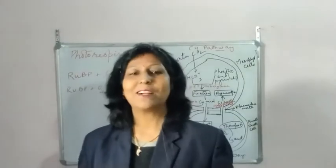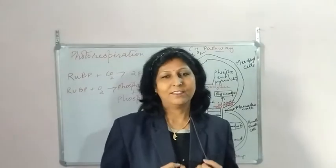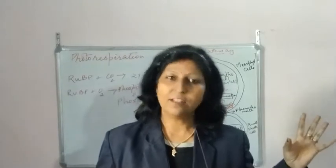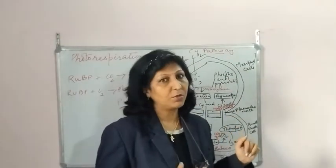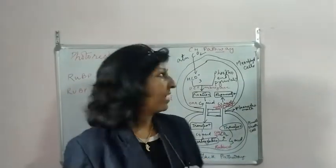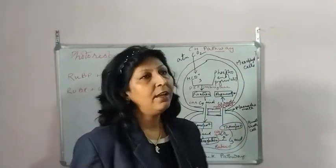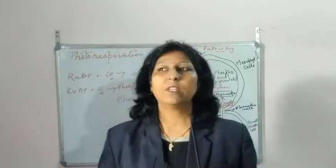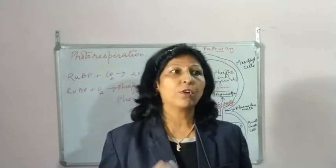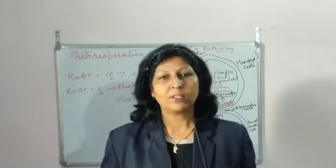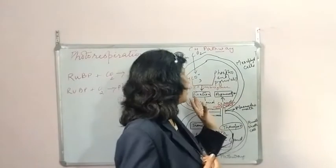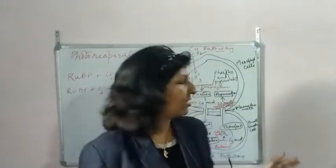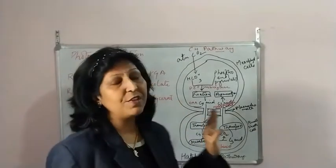Welcome back. Today we'll discuss the C4 pathway and photorespiration. We already did the Calvin cycle or C3 pathway yesterday. In the last class we discussed that there are two types of CO2 acceptors, meaning two types of plants: one where we have C3 acid, and the other where we have C4 acid, which is oxaloacetic acid.